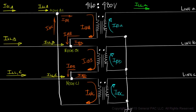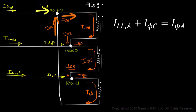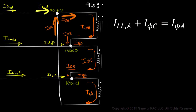We know exactly what's going into each node and exactly what's coming out of each node. We are now going to use Kirchhoff's Current Law on each node to describe the relationship between Line Currents and Phase Currents. Starting at Node A1: Line Current A flows into Node A1, and Phase Current C also flows into Node A1, while Phase Current A flows out of Node A1. Applying KCL: Line Current A plus Phase Current C equals Phase Current A.